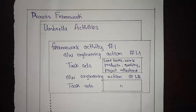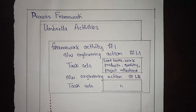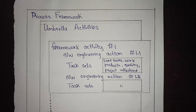Process is defined as a framework to develop projects — covering how technical methods are applied, how work products are produced, how milestones are established and reached, how quality is ensured, and how changes are properly managed. If changes are not properly managed, certain corrective actions and repercussions must be addressed, which is why we use a process.